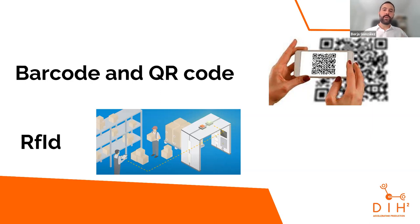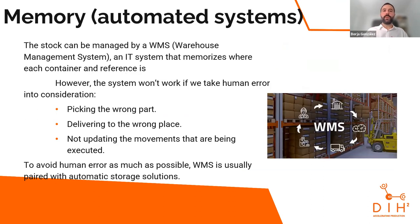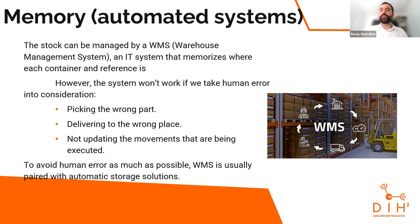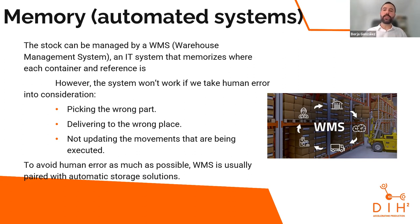There are also many RFID types — with or without battery — like large arcs where you pass a whole pallet through and it automatically reads how many pieces of each item there are because each item is coded. Then we have the WMS — Warehouse Management System — the IT system that memorizes where each container and reference is. The WMS needs to be paired with other automation systems because human error remains — picking the wrong part or delivering to the wrong place. Workers need to scan parts so the system confirms correctness and directs delivery, making the system more robust with fewer errors.